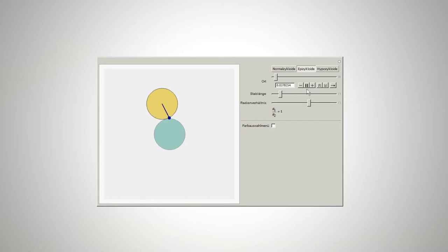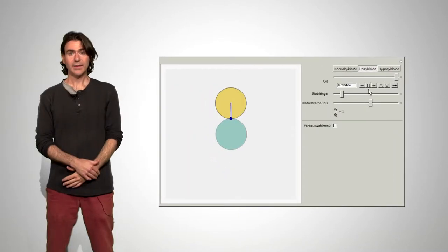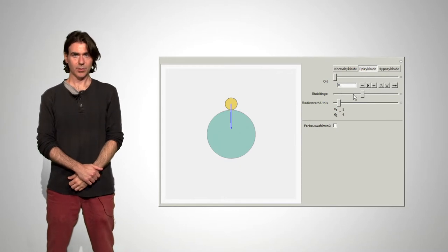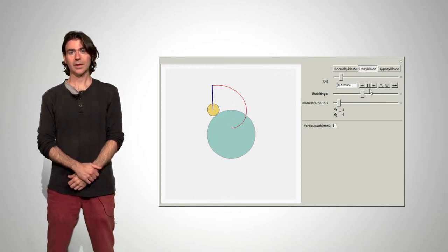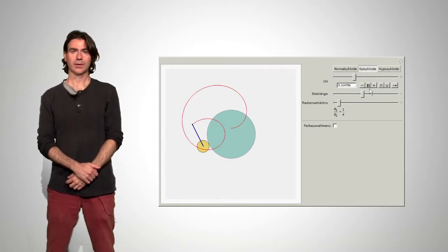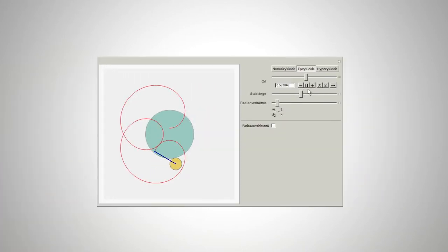Probably the best-known epicycloid is the cardioid. It's produced when the two radii are of the same length. It owes its name to its heart-like shape. In this case, we can also vary the length of the rotating poles. The resulting curves we call epitrochoids. If the length of the pole is bigger than the radius of the rolling circle, once again we have looping curves. In this way, one can produce many lovely patterns.